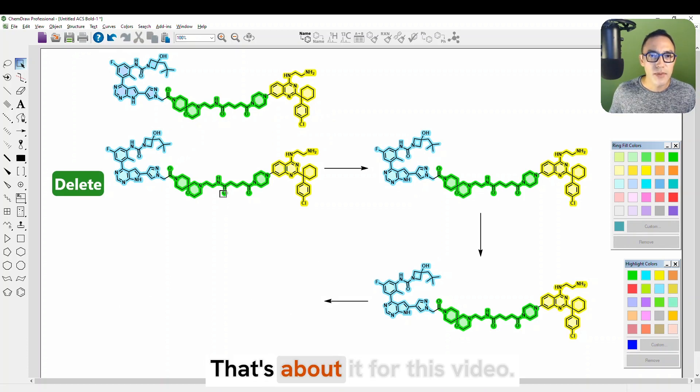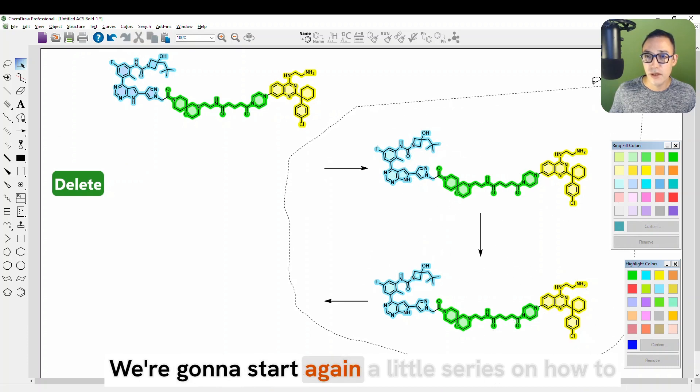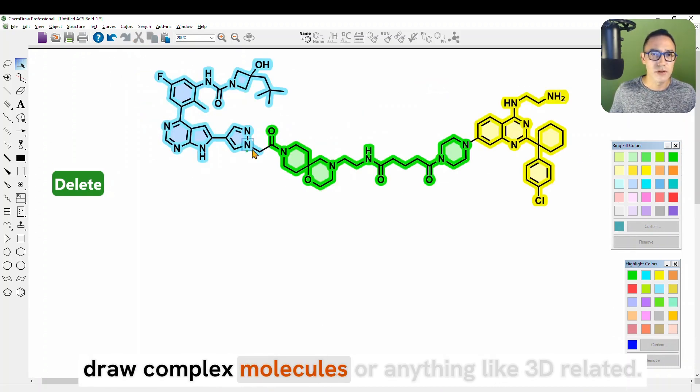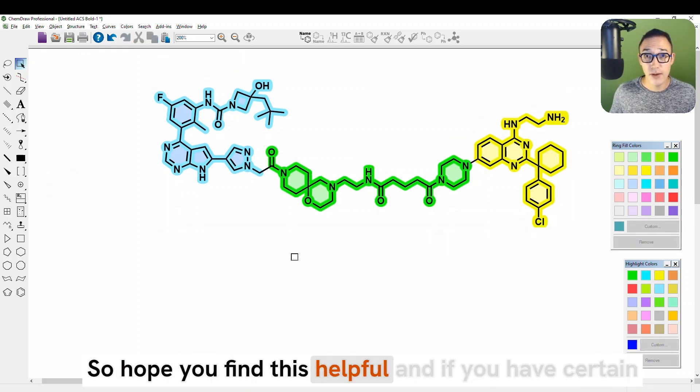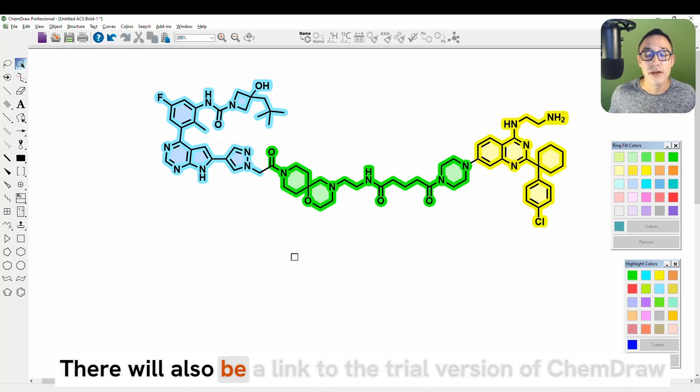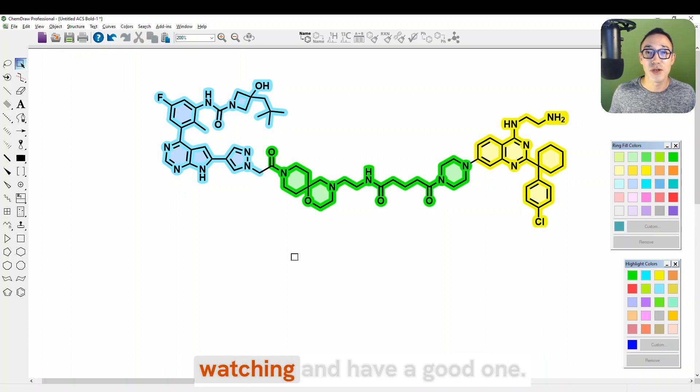That's about it for this video. I hope it has been helpful. We're going to start again, a little series on how to draw complex molecules or anything like 3D related. So hope you find this helpful. And if you have certain requests, just put them in the comments of this video. There will also be a link to the trial version of ChemDraw ChemOffice 22 if you want to give this a shot. All right. Thank you very much for watching and have a good one.